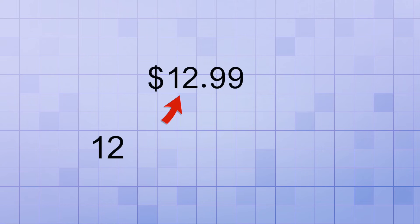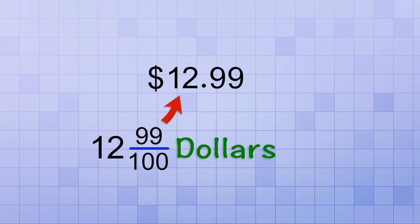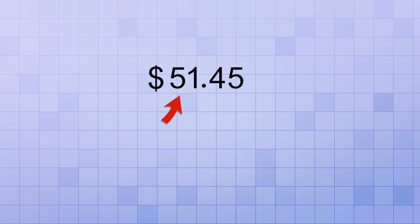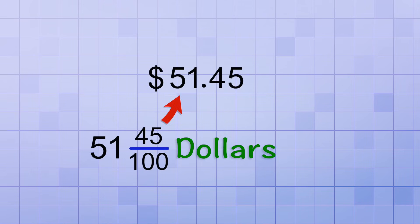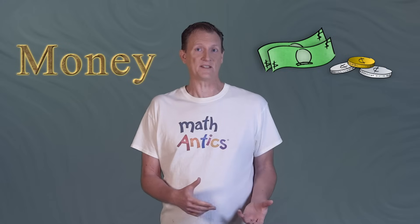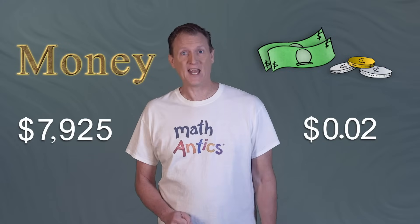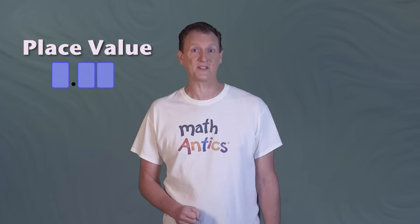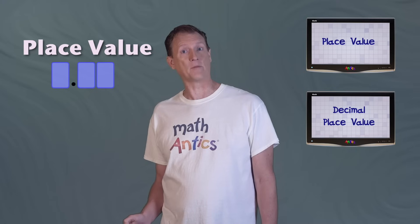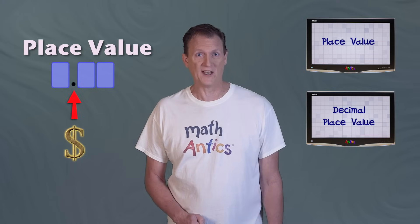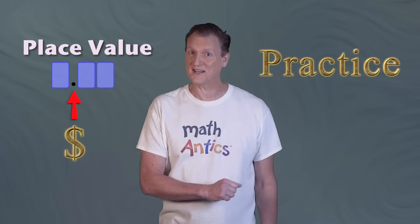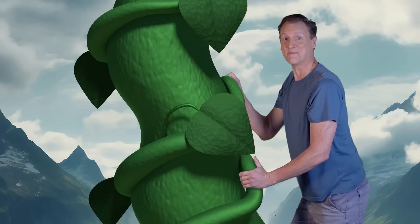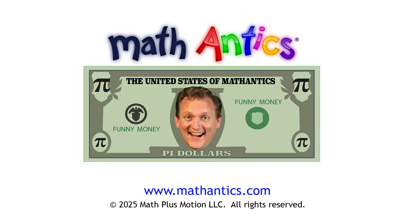It's still customary to say cents when reading these amounts. For example, twelve point nine nine dollars would typically be read as twelve dollars and ninety-nine cents. And fifty-one point four five dollars would typically be read as fifty-one dollars and forty-five cents. Fractions and decimals give us a way to combine dollars and cents into one system that can be used for any amount of money, big or small. Because money relies so much on place value, be sure to check out our videos about those topics if needed, and practice what you've learned. Thanks for watching Math Antics, and I'll see you next time!